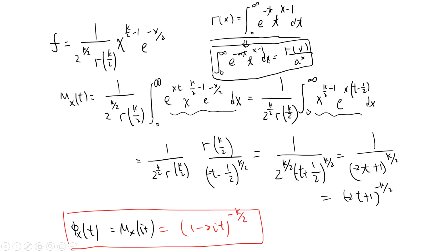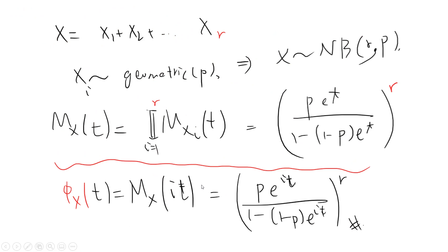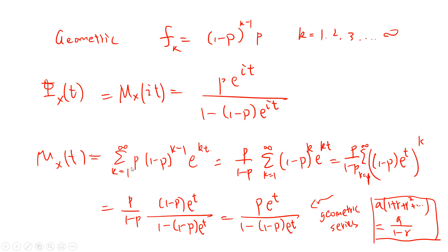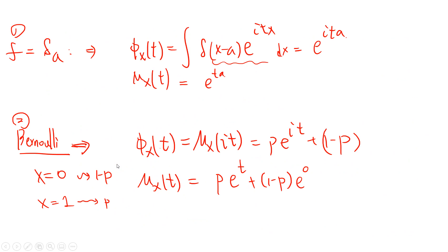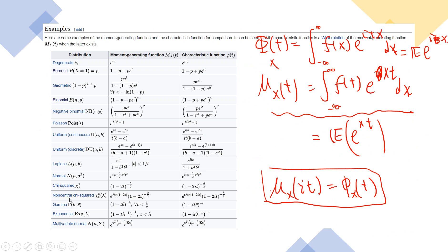Note that here t should be t. The characteristic function is just M_X(it) — replacing t with it in the moment generating function — so the answer is (1 minus 2it)^(-k/2). This matches the result from our previous table.